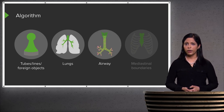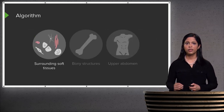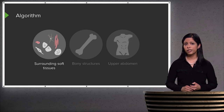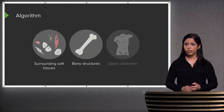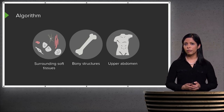Next, I look at the airway, including the trachea and bronchi. I then look at all of the mediastinal boundaries to make sure they appear normal without any mass. I take a look at surrounding soft tissues, including the soft tissues of the shoulders, neck, and chest. I also look at the bony structures — multiple ribs, clavicles, and often the shoulders are visible on a chest radiograph. Finally, I look at the upper abdomen. Although only a small portion is visible, it's important to make sure any abnormalities present are not missed.